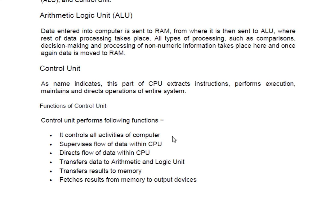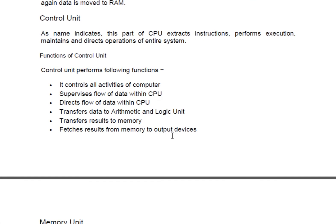Let's discuss the functionalities of the control unit. First, it controls all activity of the computer — how to show data, how to pass data from the memory, and everything else. It also supervises the flow of data within the CPU. So while the CPU takes all decisions, the control unit also supervises the data flow of the computer, deciding whether data should be transferred to the printer, monitor, speaker, or other output devices.